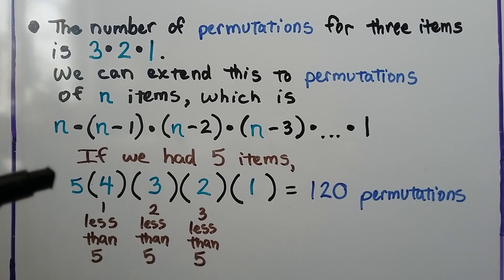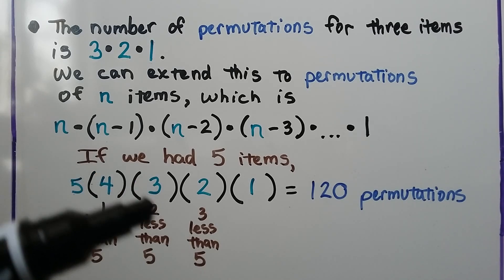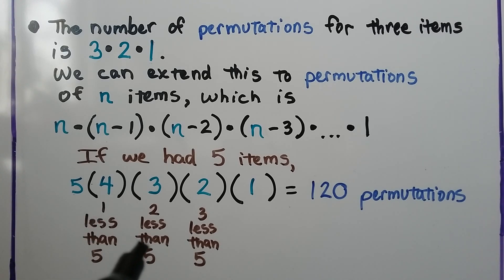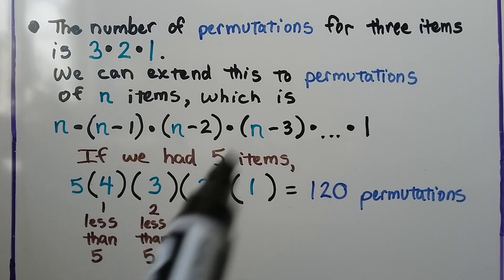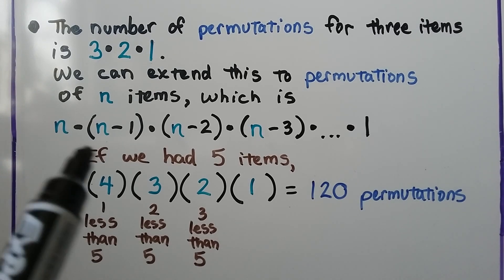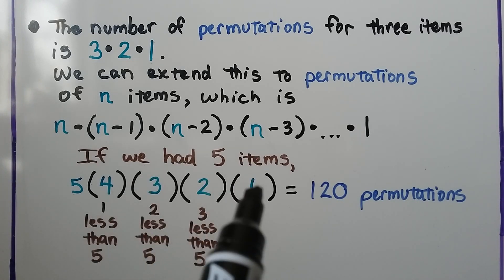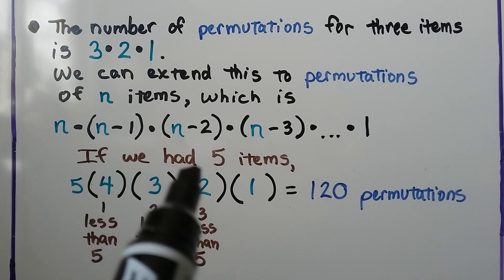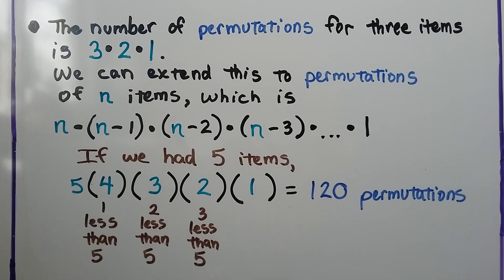For five items, we would have five times four times three times two times one, which equals 120 permutations. This one is one less than five, this is two less than five, this is three less than five. We multiply them together and we get the number of permutations. If we had nine items, we would do nine times eight times seven times six times five, all the way down to times one. If we had a hundred items, we would do 100 times 99 times 98 times 97 times 96, and so on, all the way down to one.